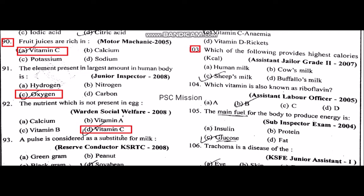A pulse considered as a sustainable substitute for milk is soya bean. Which of the following provides the highest calories? Which vitamin is also known as riboflavin? Riboflavin is vitamin B2.